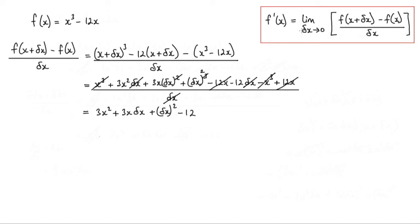Now what I want to do is to apply the limiting process. So f prime of x is equal to the limit as delta x tends to 0 of all of this here. So 3x squared plus 3x delta x plus delta x squared minus 12.